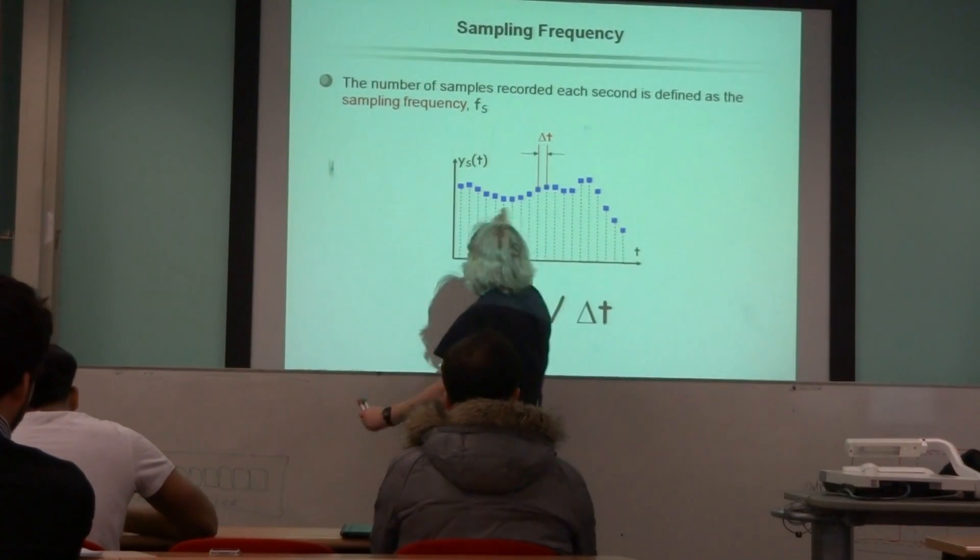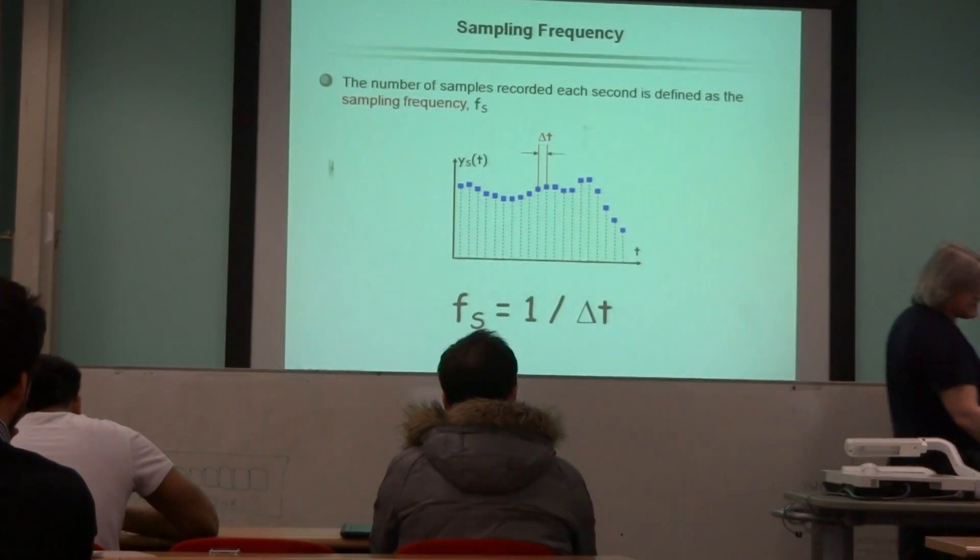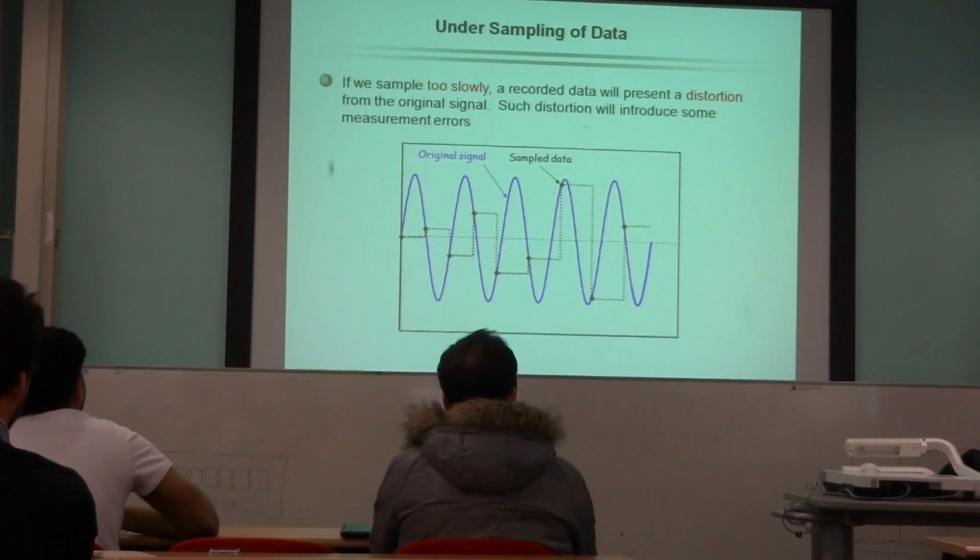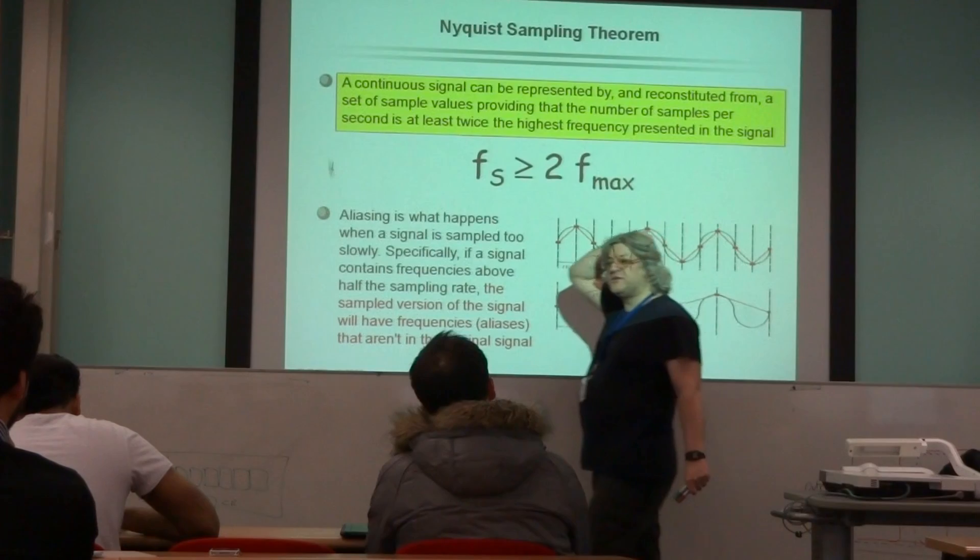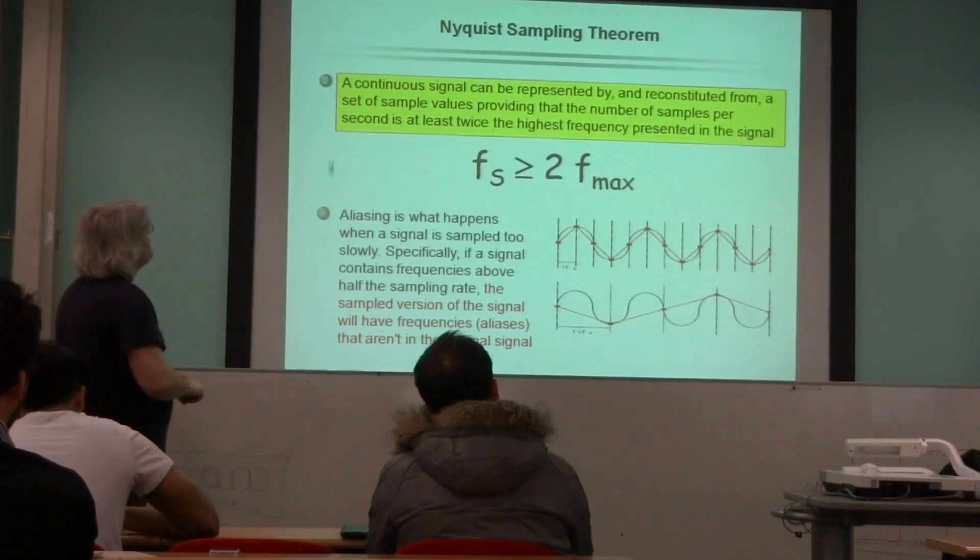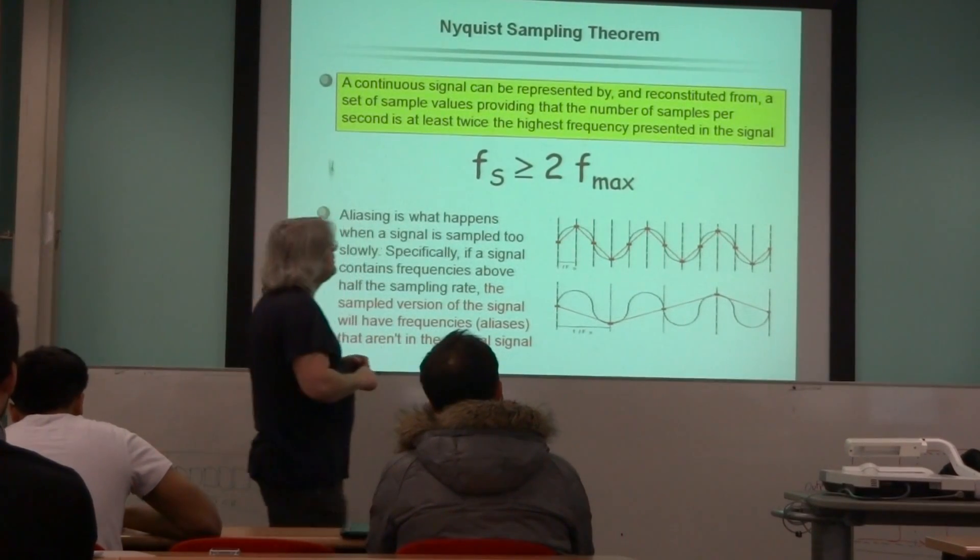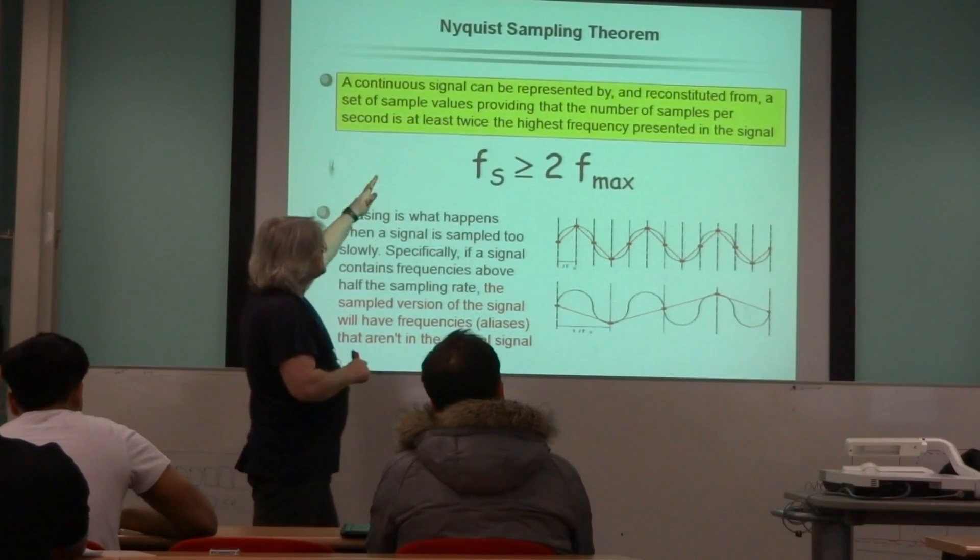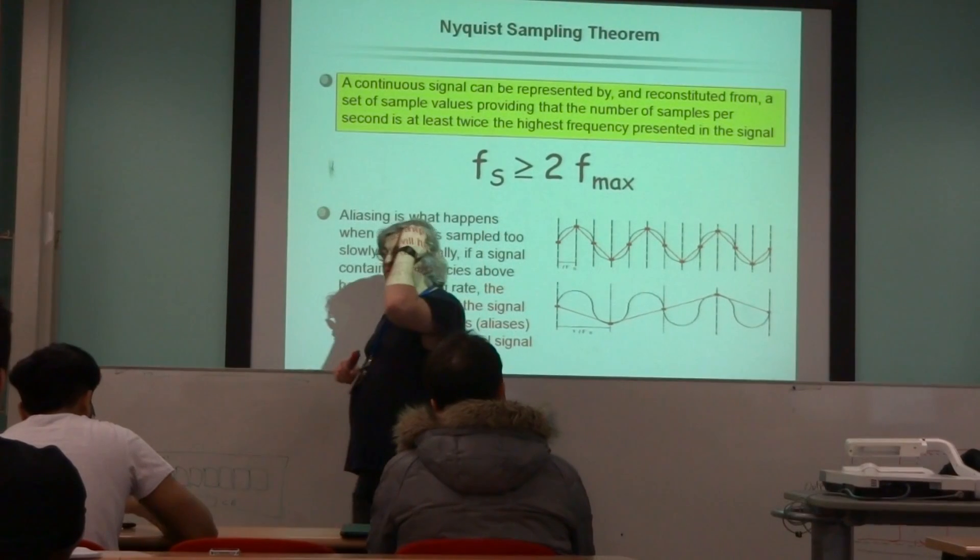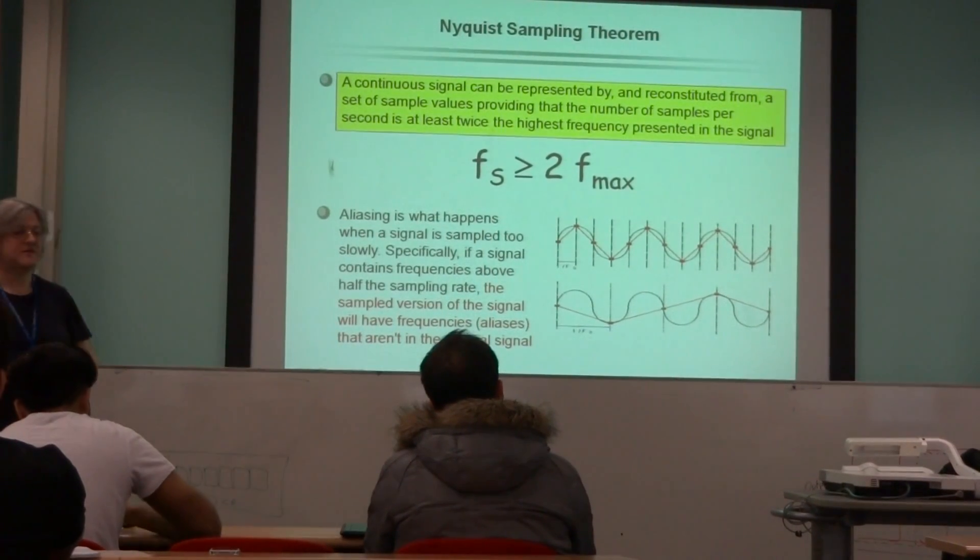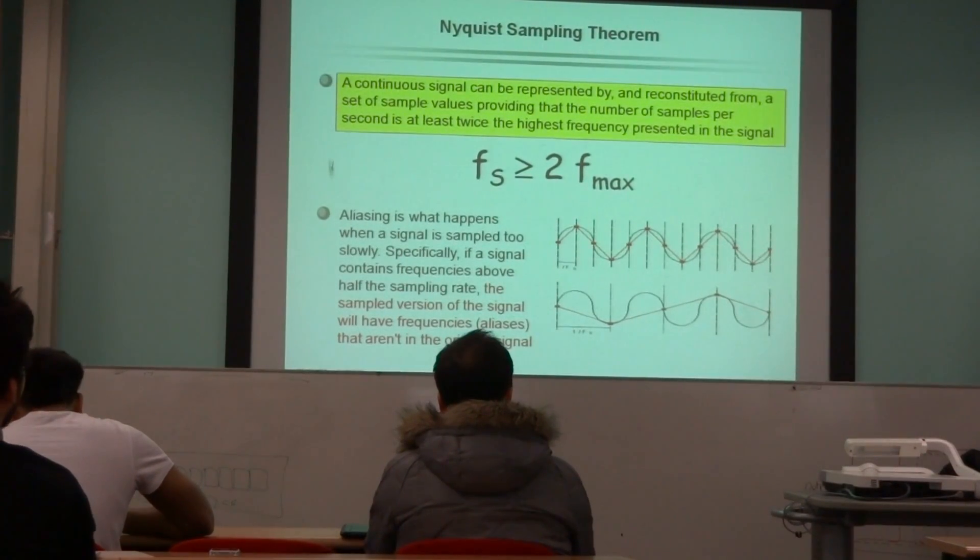The frequency at which we sample is 1 over the time between the samples, and I think it's remarked there, but what you would be expected to know is about Nyquist. Now, let me skip on to that and then come back. So, in the yellow box, you would be expected to know that in order to reproduce an analog signal accurately, you must sample that signal at least twice the highest frequency that you wish to reproduce. I think you've probably met that in year one anyway. Yes, some people are nodding.